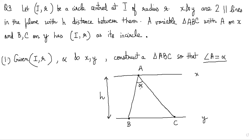We have to also make IR the incircle — something like this. The figure is obviously not accurate because I'm drawing it by hand. The incircle will satisfy the property that it is the point of intersection of internal angle bisectors. So this is my I, and this radius must be R.